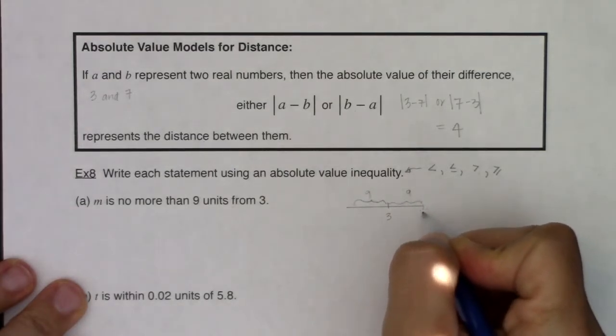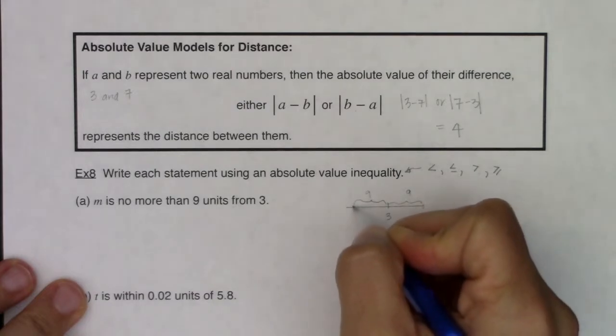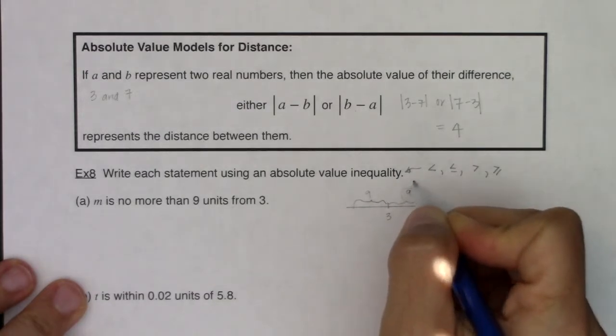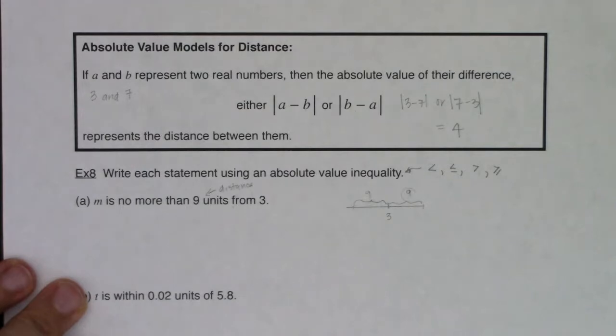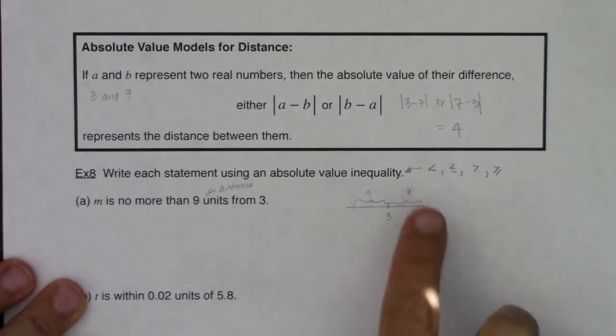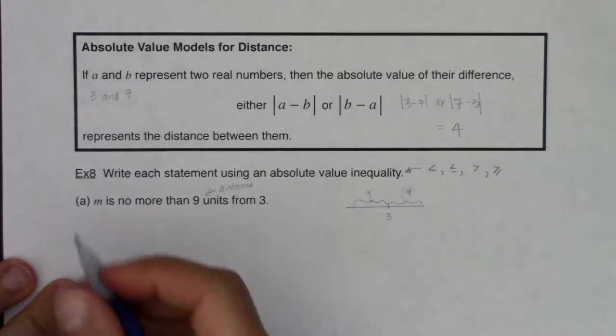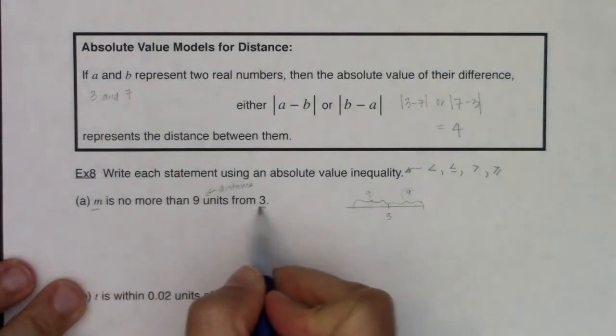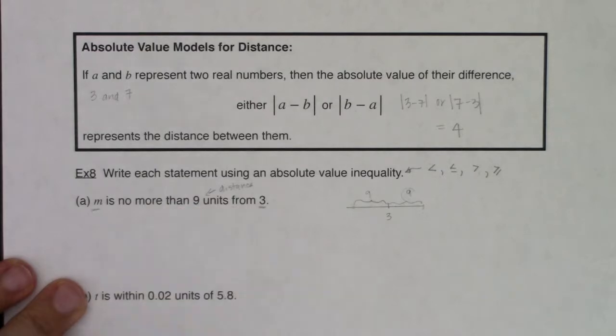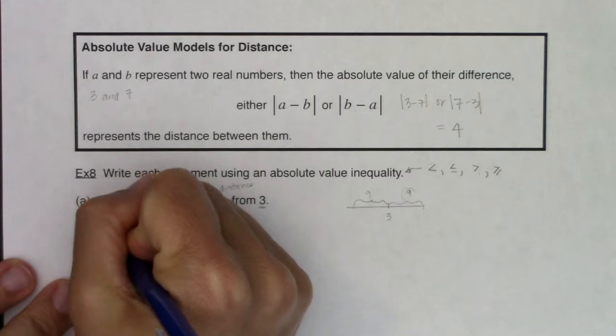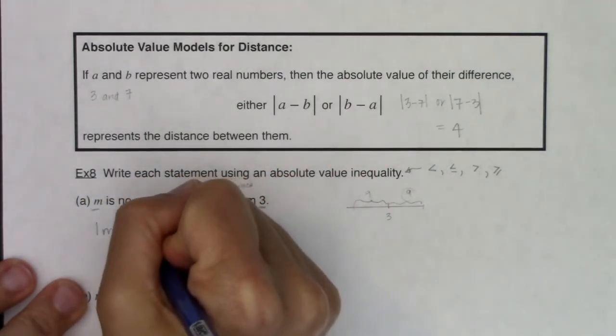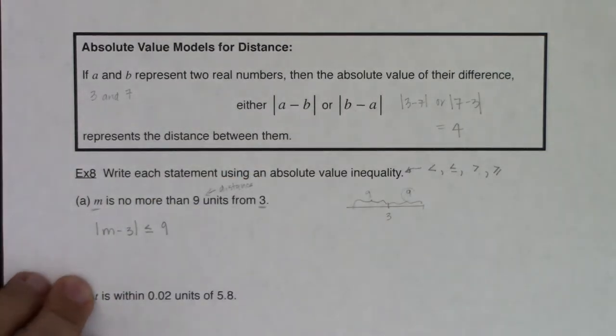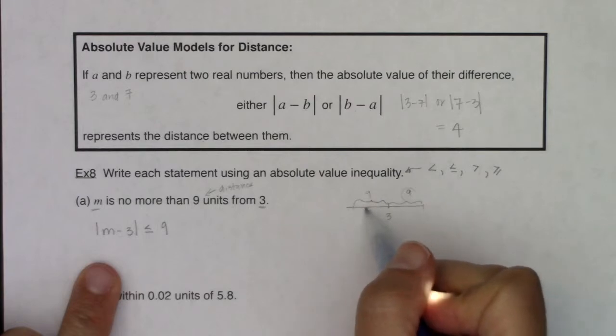It could be any of these numbers in here, up to whatever this upper bound is, any of these numbers in here, down to that lower bound. But I think you hear that nine, nine units, that's the distance. That's what the absolute value will be set, either less than, less than or equal to, greater than or greater than or equal to. The two numbers that are battling this out are m and 3. These are the two numbers that want to be no more than nine units away from each other. So I'm going to take the absolute value of m minus 3.